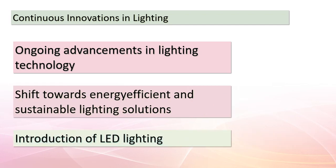Let's wrap up our enlightening journey by exploring continuous innovations in lighting technology. We're witnessing a shift towards energy-efficient and sustainable lighting solutions. One notable example is LED lighting — Light Emitting Diode — which is incredibly energy efficient and has a much longer lifespan compared to traditional incandescent bulbs. From smart lighting systems that adapt to our needs to novel ways of harnessing renewable energy for illumination, the possibilities are endless. Remember that the quest for innovation and energy efficiency continues to shape the world we live in.